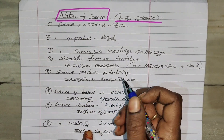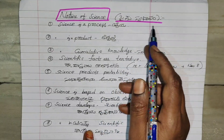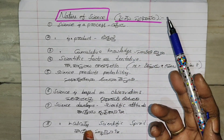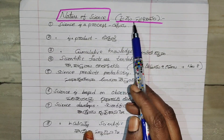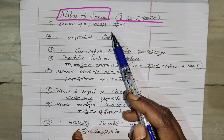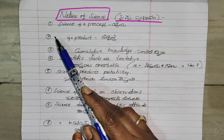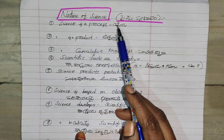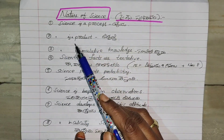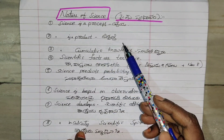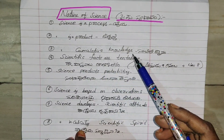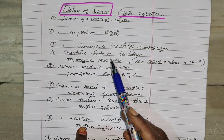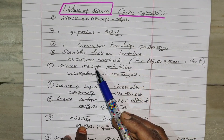Next topic: Nature of Science — science yokaswabhavamu. Science is a process. Science is a product. Science is cumulative knowledge. Scientific facts are tentative.